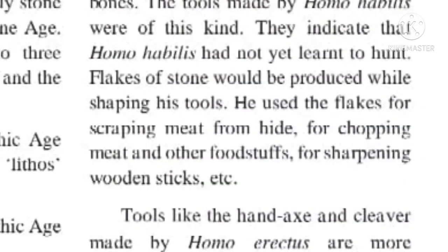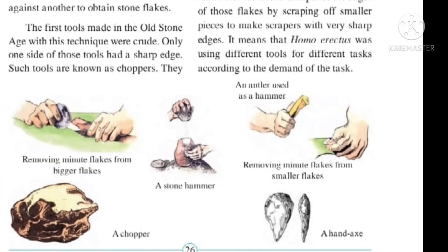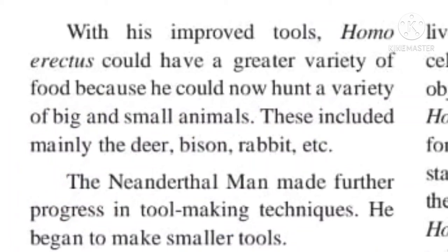By observing the type of tools he made, it is indicated that Homo habilis had not yet learned to hunt. Tools like the hand axe and cleaver, made by Homo erectus, are more proportionate and symmetrical than the choppers made by Homo habilis. Homo erectus could mentally visualize his tools even before he actually shaped them. He used antlers to obtain stone flakes and further sharpened their edges by scraping off smaller pieces to make scrapers.